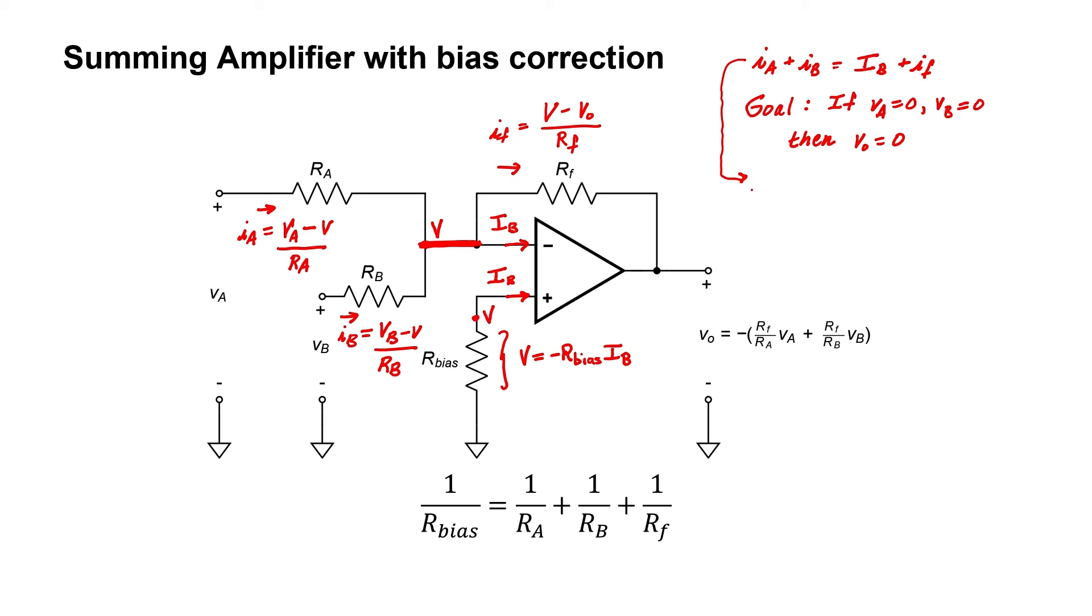Therefore, let's take this equation and assume that my inputs are turned off. Let's start with Ia. Turning off my input, I'm just left with minus V over Ra. Now, let's look at input I sub B. Turning off my input V sub B, I'm just left with minus V over R sub B.